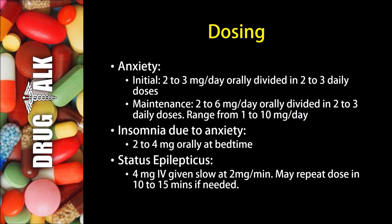Now for some examples of dosing. In anxiety, the initial dose would typically be 2 or 3 mg per day orally, divided in 2 or 3 daily doses. For maintenance therapy, the dose can be between 2 and 6 mg per day orally, divided in 2 or 3 daily doses, with an overall range of 1 to 10 mg per day. With insomnia due to anxiety, we would typically see a dose of 2 to 4 mg orally given at bedtime. And in status epilepticus, we would usually see 4 mg given intravenously at a slow rate of 2 mg per minute, with a possible repeat dose in 10 to 15 minutes if needed.